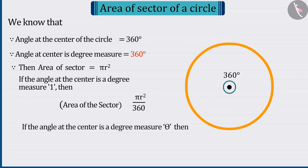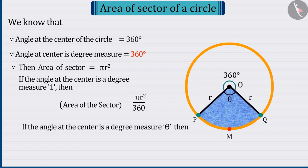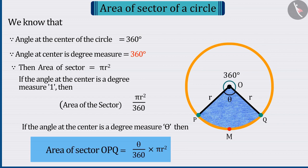So, can you tell when the angle at the centre is theta, what will be the area of the sector? Absolutely correct! The area of the sector OPQ is theta divided by 360 multiplied by Pi R square, with which we can determine the area of any sector.